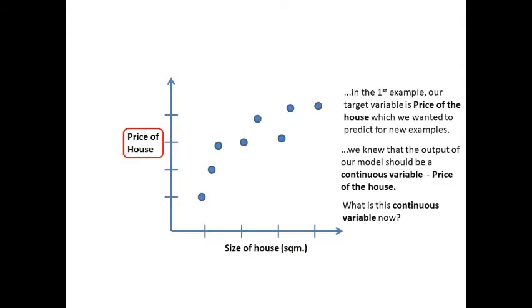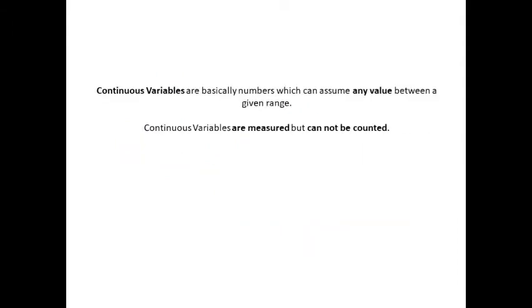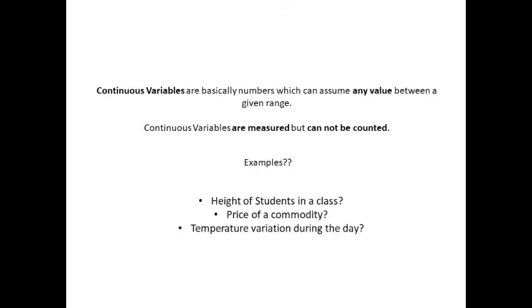What is this continuous variable now? Continuous variables are basically numbers which can assume any value between a given range. Continuous variables are measured but cannot be counted. Height of students in a class or price of a commodity or temperature variation during the day. So for example, temperature varying throughout the day is a continuous variable.